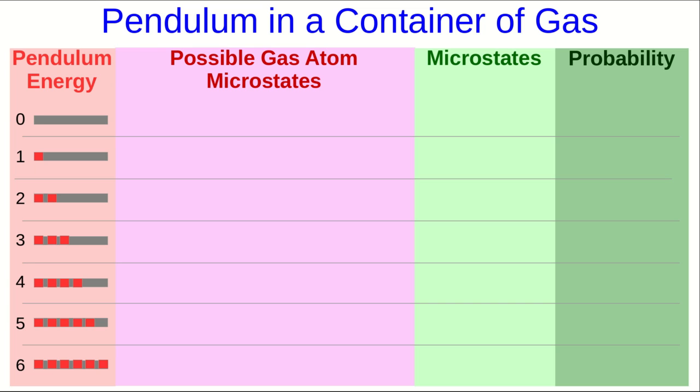Well, if the pendulum has six units, in other words, all of the energy, that's easy. There's only one way that's possible. And that's for none of the gas atoms to have any energy. Now, if the pendulum has five units, then there's one unit in one of the gas atoms. But since there are three gas atoms, any of those three could have that unit of energy. And so there are three ways for this to happen. So this gives us so far numbers of microstates for the macrostates corresponding to the pendulum having five or six units of energy.